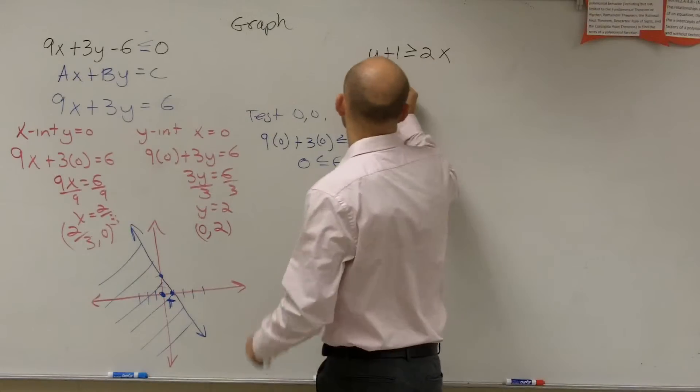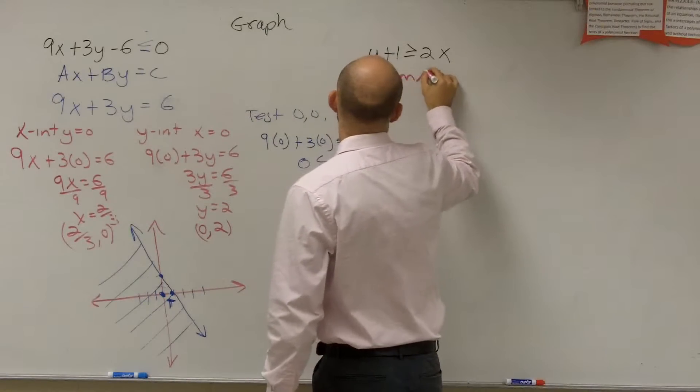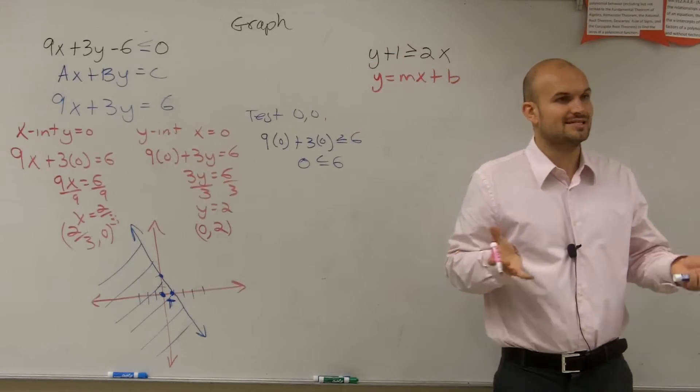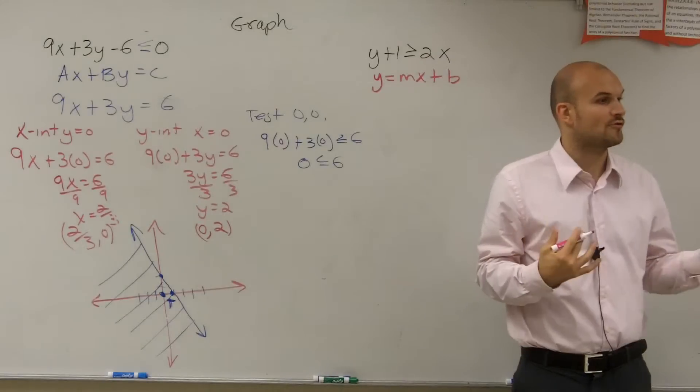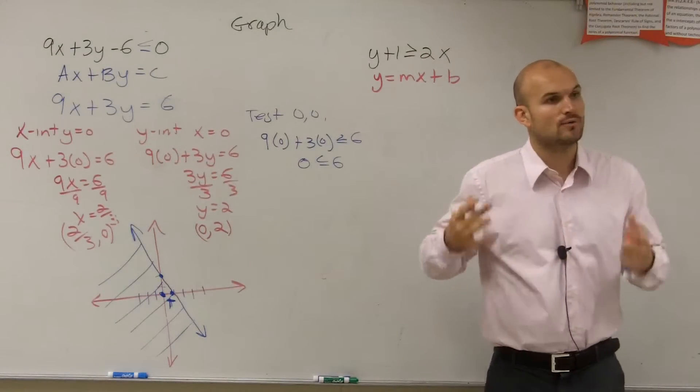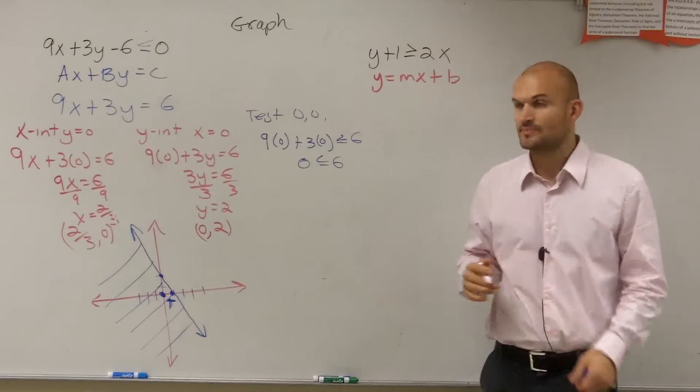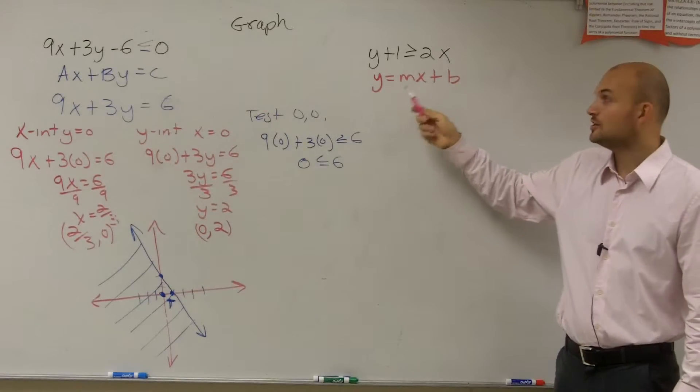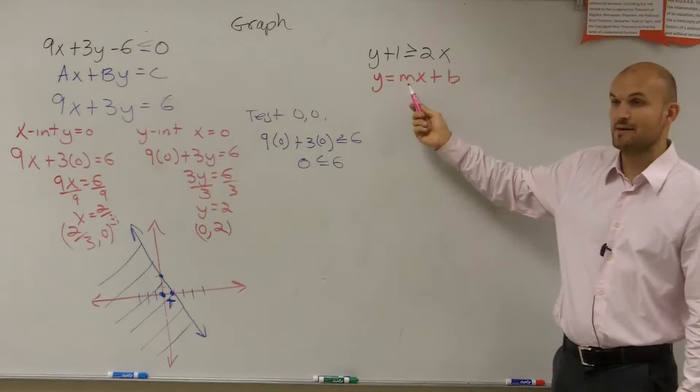is y equals mx plus b. It's important to know both formats, because it's easier sometimes to graph out of one format or the other. But you should know how to graph from both formats. So y equals mx plus b. Remember, to graph from this format, b is your y-intercept and m is your slope.